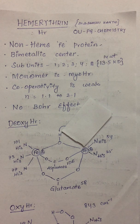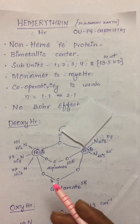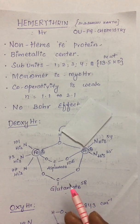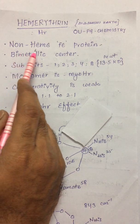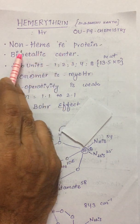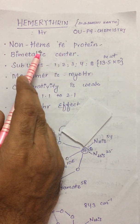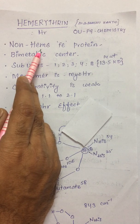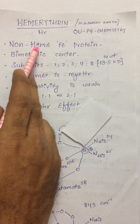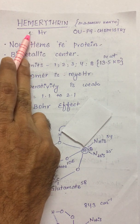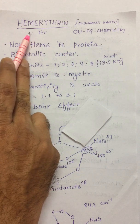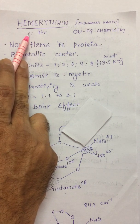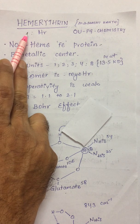Hemerythrin, abbreviated as HR, is another oxygen-binding protein — a non-heme iron protein. It is called non-heme since the metal atom is not surrounded by the porphyrin prosthetic group. Though the name contains 'heme,' it is only named after the Greek word for blood.